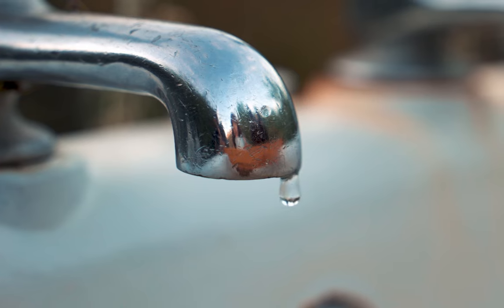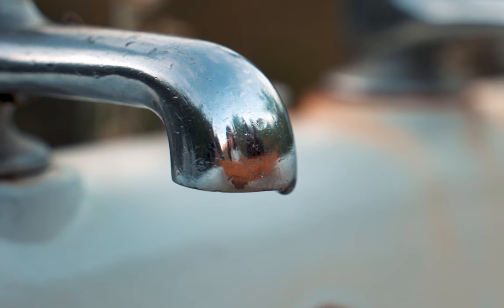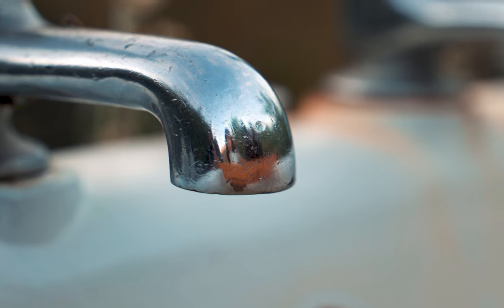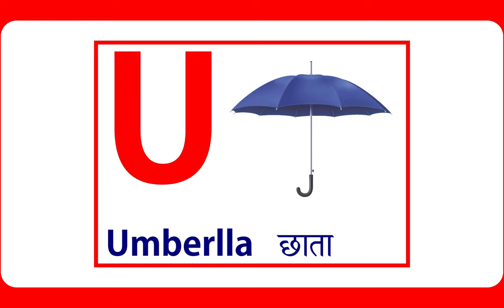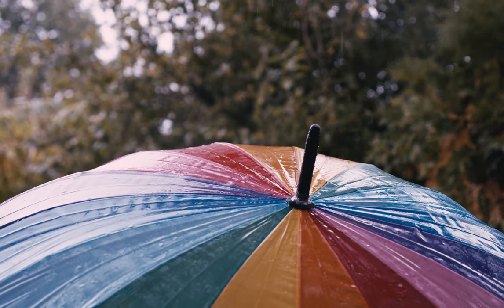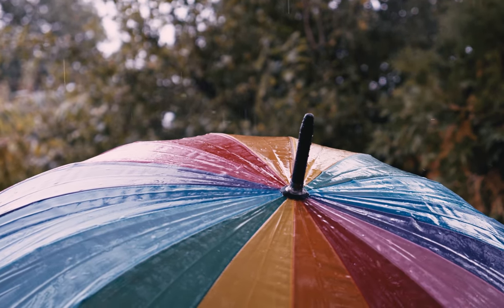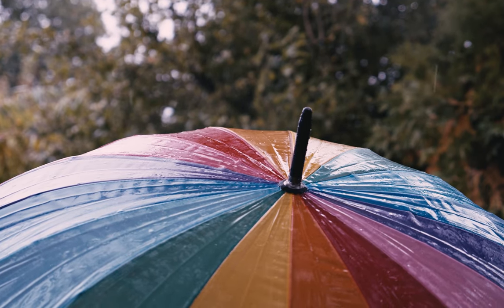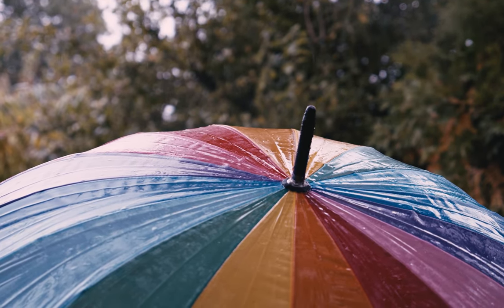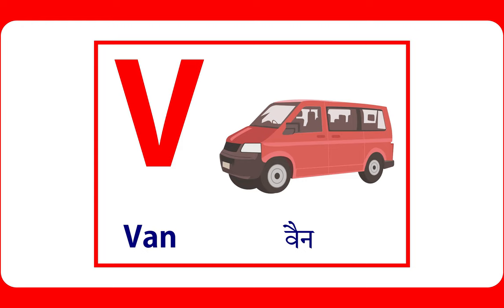U is for umbrella. Umbrella is used for rain. V is for van. Van is a vehicle.